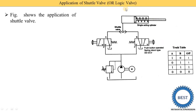In an earlier video we studied AND logic, where we need to press the switches of both directional control valves to supply oil to the twin pressure valves. But in OR logic, either pressing switch A or pressing switch B gives us an output. In an AND logic circuit we must press both switches to achieve output, but in an OR logic circuit we only need to press any one switch.